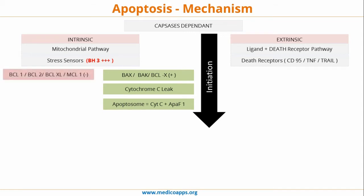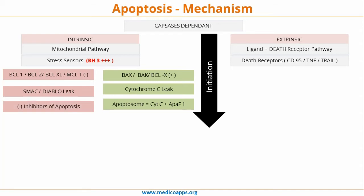Certain inhibitors of the intrinsic pathway are BCL1, BCL2, BCLxL, and MCL1. BCL stands for B-cell lymphoma; MCL stands for myeloid cell leukemia. Also, SMAC/DIABLO is an inhibitor of the intrinsic pathway.